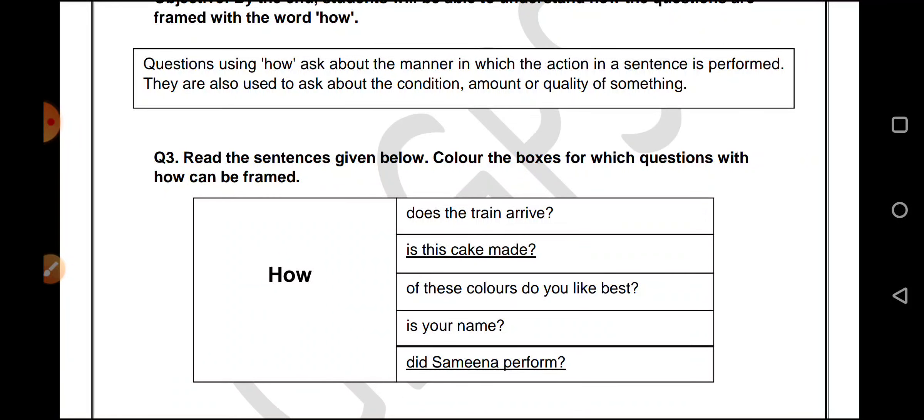You have in the box given how. So how can you frame sentences with this question word how? How does the train arrive? No, that does not sound right. How is this cake made? Yes.